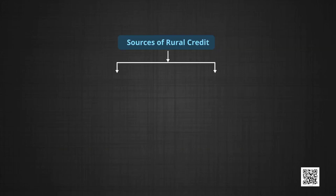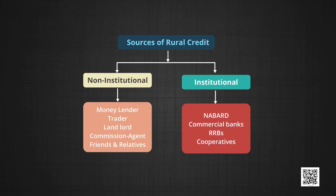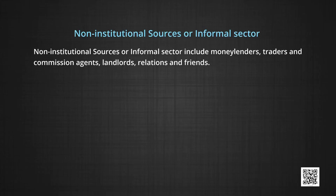Now, the sources of rural credit. Sources of rural credit are broadly classified into two categories: number one, non-institutional sources or the informal sector; and number two, institutional sources or the formal sector. Non-institutional sources or informal sector credit include money lenders, traders and commission agents, landlords, relatives and friends.